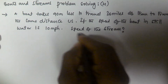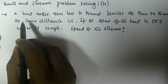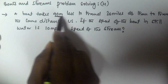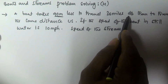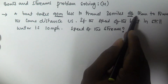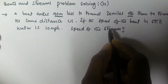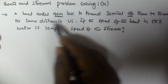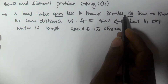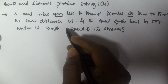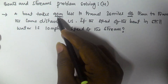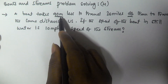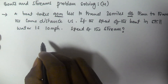So let us see the problem. A boat takes 90 minutes less to travel 36 miles downstream. That means the difference between the time taken upstream minus downstream is 90 minutes. The time taken to travel downstream minus upstream is 90 minutes.